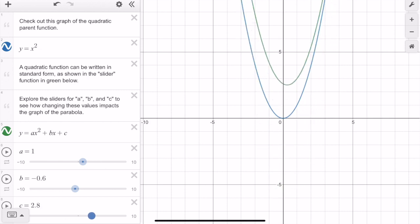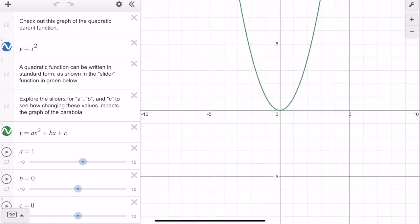A good skill to have is whenever you're observing a characteristic, you want to ask yourself what do I know, what do I see, and what do I wonder. So notice that when A equals 1, B equals 0, C equals 0...